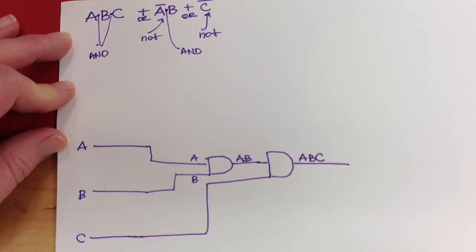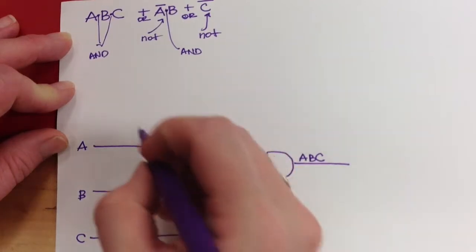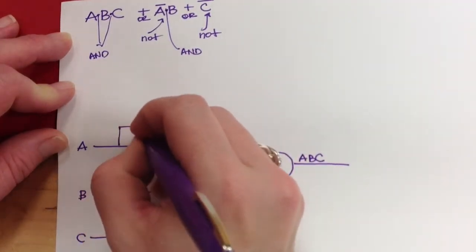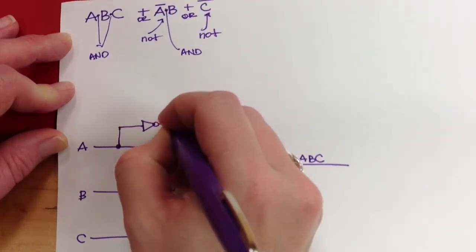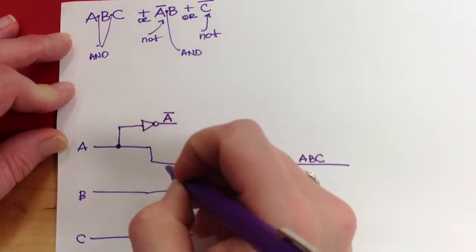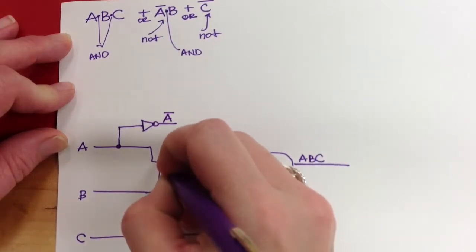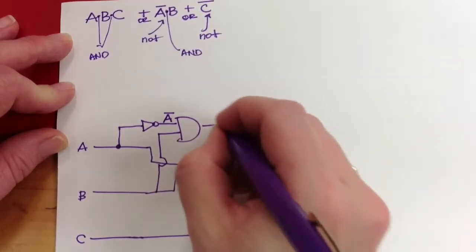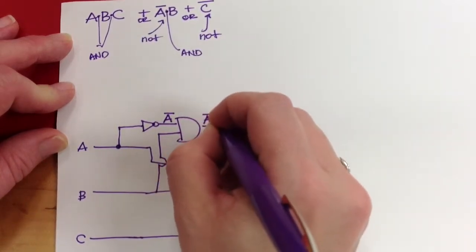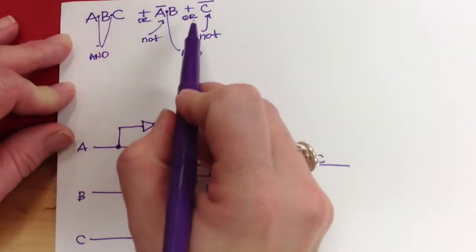So I also am going to need a NOT A and a B. So let's make a NOT A here. And I want to join that through an AND gate with B. And so now I've made this expression and this expression.